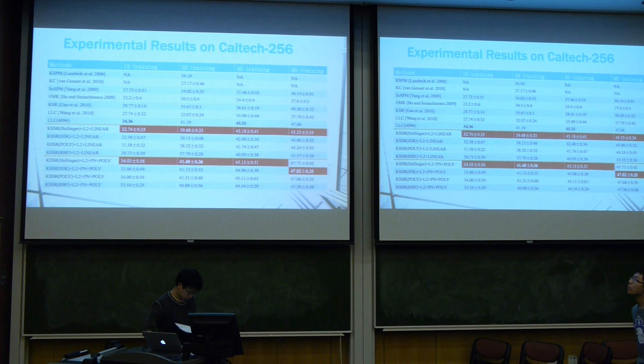This is experimental results on Caltech-256 dataset. This is a challenging dataset. Compared with the previous approaches in sparse coding for image classification, our proposed algorithm greatly increased the classification accuracy by like 5%. The last two groups is our algorithm using different kernels. We can see that chi-square kernel achieves best performance and then is HIK, then polynomial and RBF.